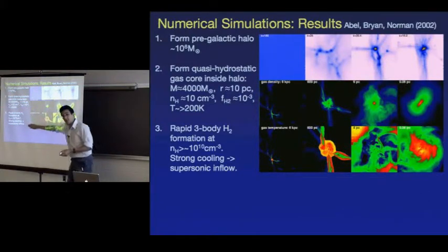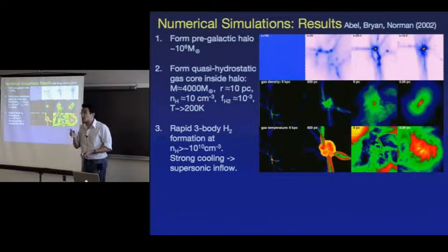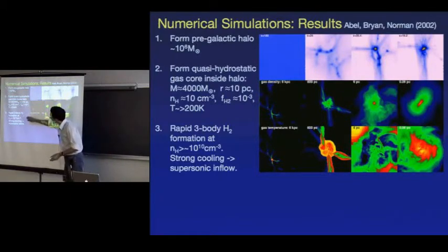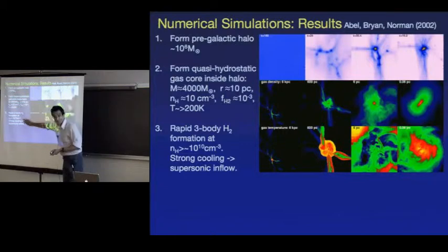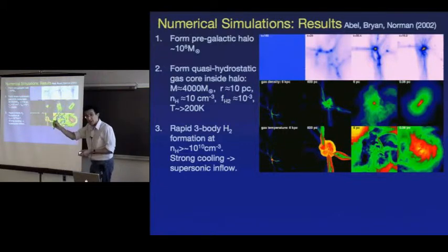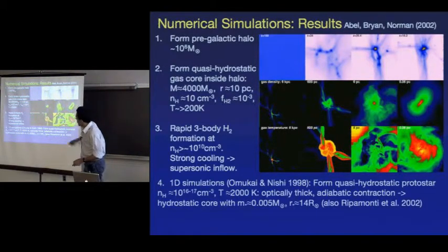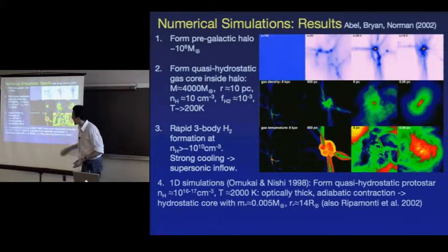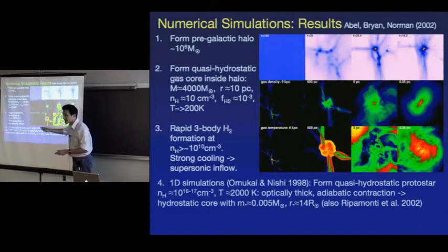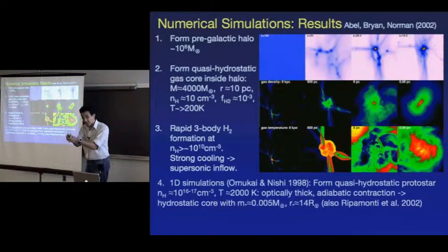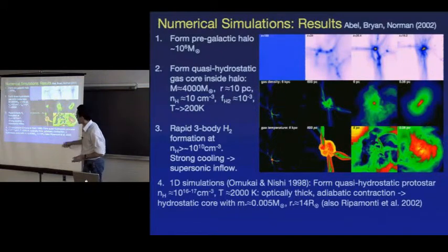At high densities you can form H2 through three-body processes, which becomes important only at densities around 10^{10} — really just in the center of the structure. One-dimensional simulations have been able to follow this all the way to actually see the star forming, and some of the latest three-dimensional simulations have now seen a quasi-static structure corresponding to a protostar. But you cannot follow this evolution much further because you're now having to resolve very short time steps.